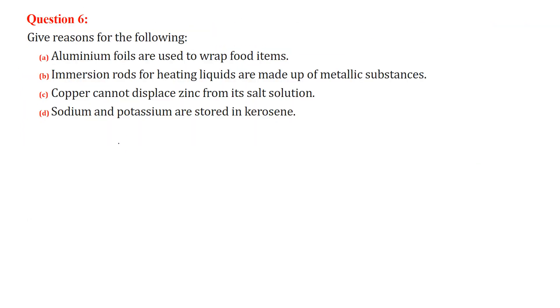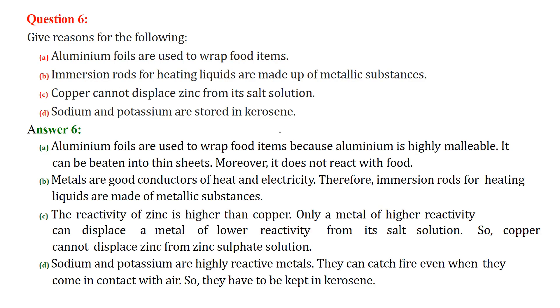Give reasons of the following. Aluminum foils are used to wrap food items. Why? First of all, because aluminum is a metal, it is very highly malleable. So it can be beaten into sheets, very fine, thin sheets, and it does not react with food. That is why we use it to wrap food items.